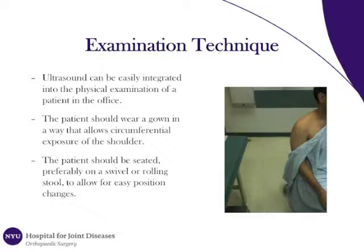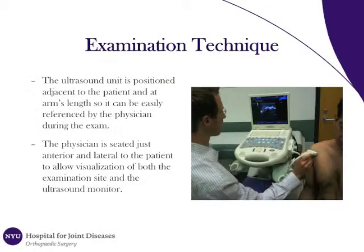Ultrasound can be easily integrated into the physical examination of a patient in the office. The patient should wear a gown in a way that allows circumferential exposure of the shoulder. The patient should be seated, preferably on a swivel or rolling stool, to allow for easy position changes. The ultrasound unit is positioned adjacent to the patient and at arm's length so that it can be easily referenced by the physician during the exam. The physician is seated just anterior and lateral to the patient to allow visualization of both the examination site and the ultrasound monitor.